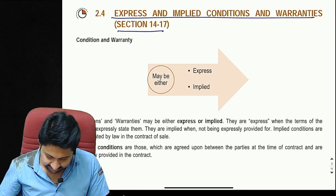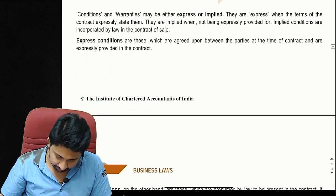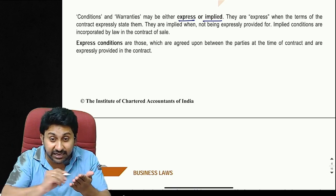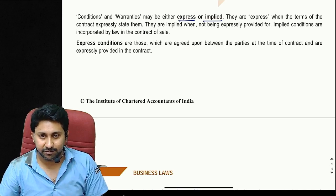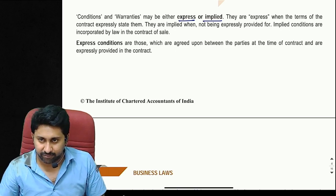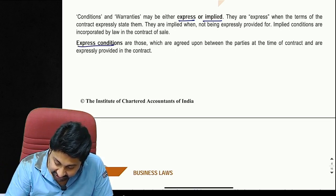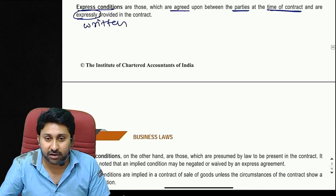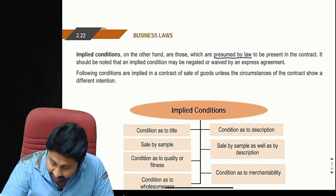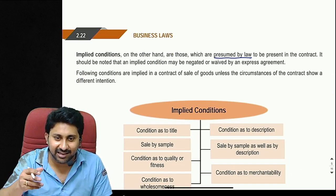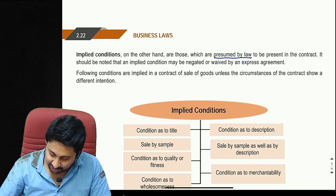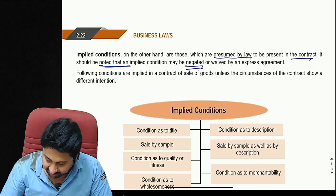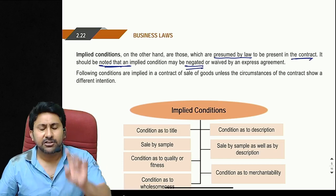Express and implied conditions and warranties: conditions and warranties may be either express or implied. Express conditions are clearly agreed upon between the parties at the time of contract and expressly provided in the written contract. Implied conditions are presumed by law to be present in the contract. An implied condition may be negated or waived by an express agreement.